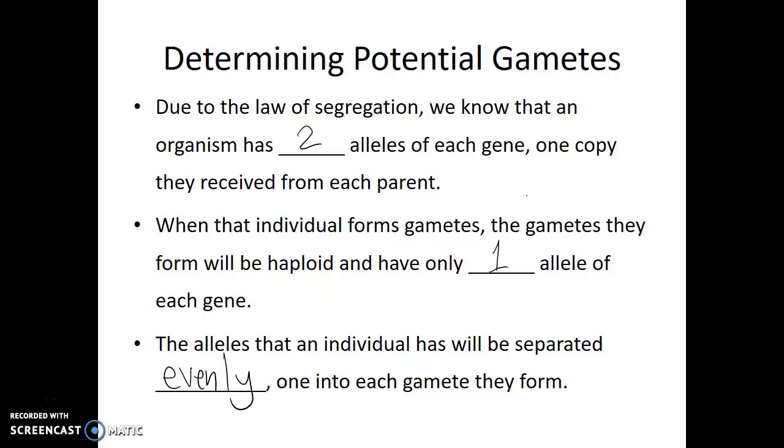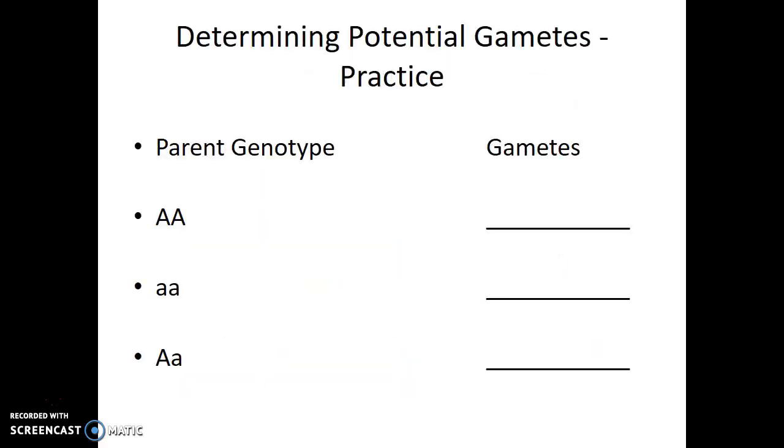In this way, we can predict what gametes an individual will make based on their genotype. In fact, let's do that. Here we're given the genotype of several different individuals, and let's use the law of segregation to determine which gametes they can make.